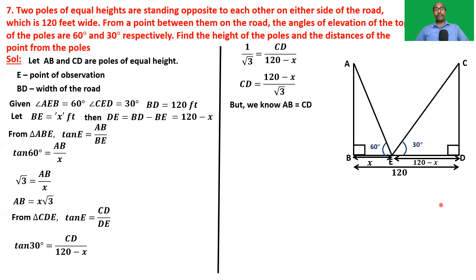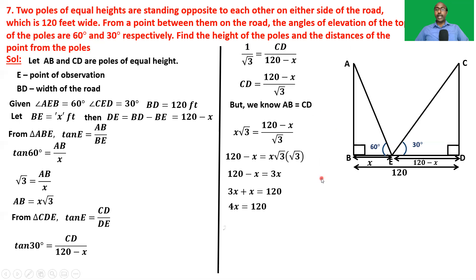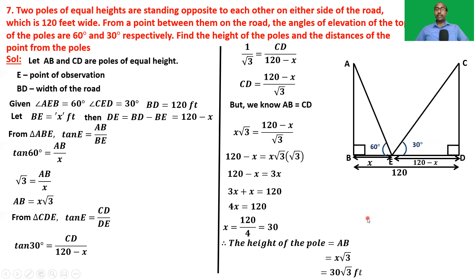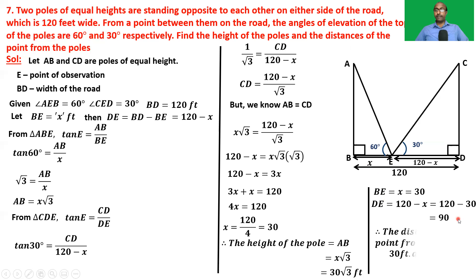Since AB = CD (poles of equal height), substituting and simplifying: x√3 = (120 − x)/√3, giving 3x = 120 − x, so 4x = 120 and x = 30. The height of the pole AB = x√3 = 30√3 feet. The distances from the point to the poles are BE = 30 feet and DE = 120 − 30 = 90 feet.